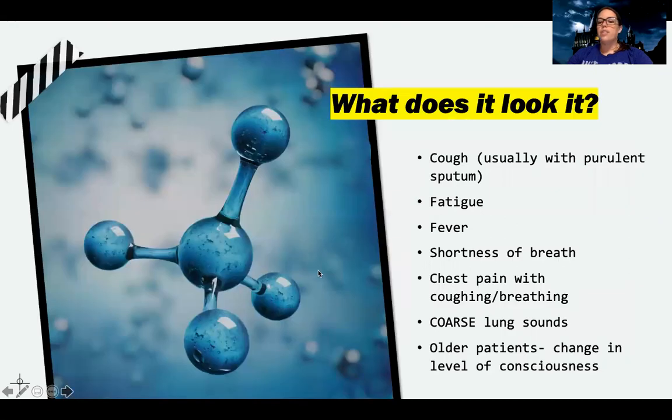This patient usually is going to complain of a cough and they're usually going to have purulent sputum. In other words, it's going to show that there's an infection in the lungs. It's that yellow, greenish, really thick sputum. They may also have fatigue, weakness, fever. They can be short of breath or complain of trouble breathing. They may have chest pain, especially when they're coughing.